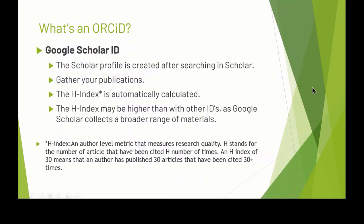The Google Scholar ID is a little bit broader. It's created from your Google Scholar profile after searching in Scholar — you can gather all of your publications and have your most cited publications listed first. Your H index is automatically calculated. The H index is an author-level metric that measures research quality; H stands for the number of articles that have been cited at least that many times. An H index of 30, for example, means the author has published 30 articles that have been cited more than 30 times. The H index in Google Scholar may be somewhat higher than other IDs, as Google collects a broader range of materials and has different definitions for citations than Scopus or Web of Science.